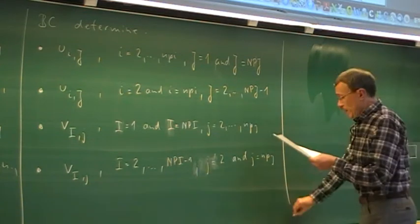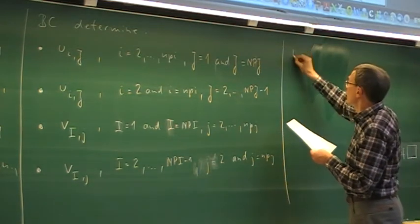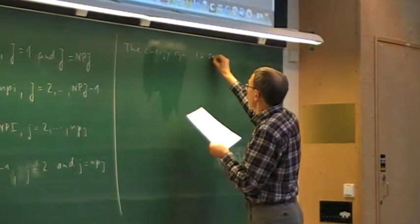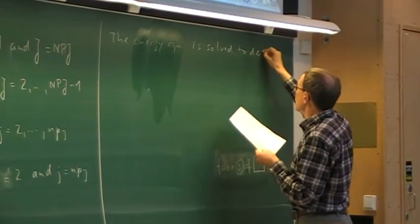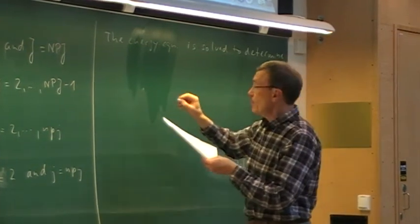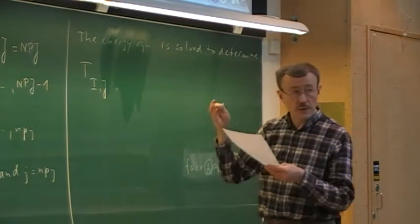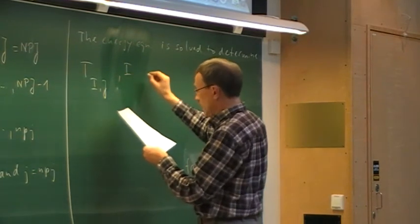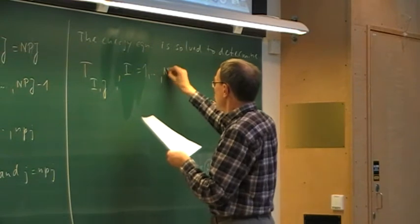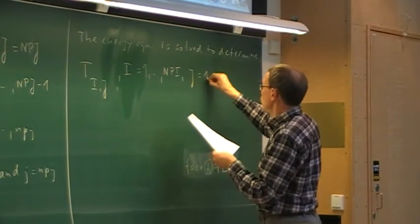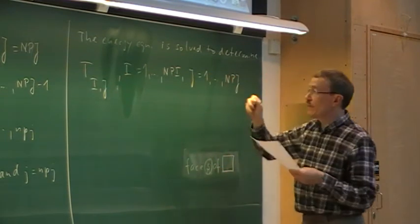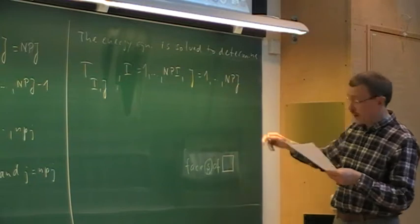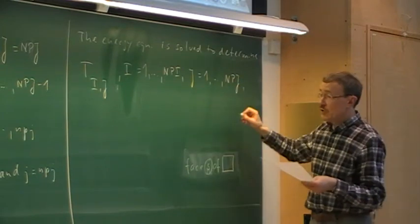So then we have the energy equation. The temperature — and that is now for the same location where we have the pressure — capital I, capital J. That is then for i equal to 1 to nPi, and for j equal to 1 to nPj. And here we have the boundary conditions at capital I=1, I=nPi, j=1, j=nPj, and so on — as we did in chapter 13.